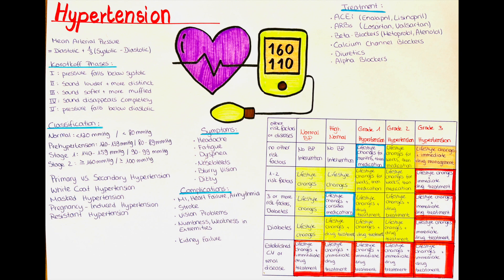The sounds that we hear during the measurement are called Korotkov sounds. They are named after Nikolai Korotkov, a Russian physician who first described them in 1905. There are five Korotkov phases. Phase one: the first sound is heard when the cuff pressure falls below systolic pressure. Phase two: the sound becomes louder and more distinct. In phase three, the sounds become softer and more muffled. And in phase four, the sounds disappear completely. In the fifth phase, the sounds reappear as the cuff pressure falls below diastolic pressure.